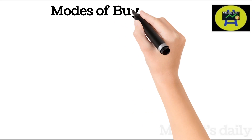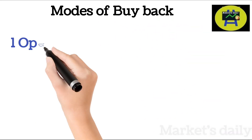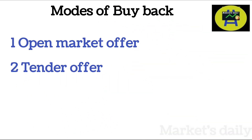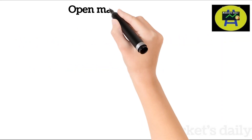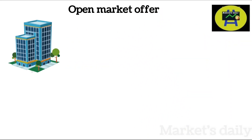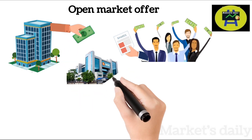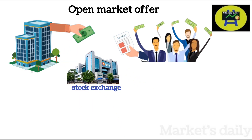Buyback can be done in two ways. The first is open market offer and the second would be the tender offer. Let us see them in detail from the next slide. In open market offer, the company buys the shares directly from the shareholders through the secondary market, i.e., through the stock exchange. If you don't know about the secondary market, please do watch our video on basics of stock market.